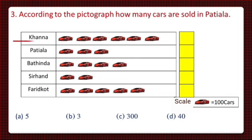The first city is Khanna and 6 pictures of cars are there. So, total number of cars sold in Khanna is 6 multiplied by 100 and that will be equal to 600. Now, the second city is Patiala and the pictures are 3 in number. So, the total number of cars is 3 multiplied by 100 and that will be equal to 300 cars.